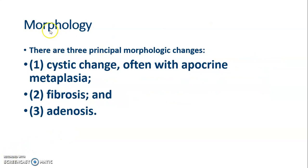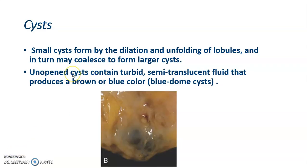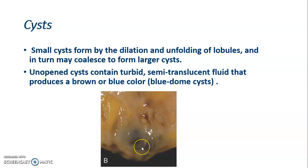In fibrocystic disease, there are three morphological changes: cystic change, fibrosis, and adenosis. Small cysts are formed by the dilation and unfolding of lobules, and in turn they may coalesce to form larger cysts. Unopened cysts contain turbid, semi-translucent fluid that produces a brown or blue color, known as blue-dome cysts.